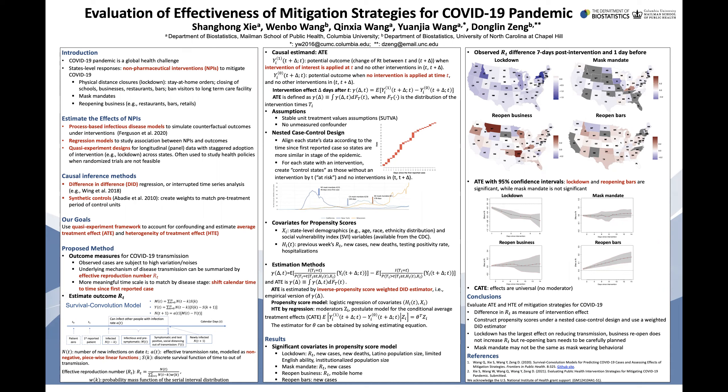To estimate the effects of NPIs, there are some methods in the epidemiological literature. Since the data is longitudinal data with staggered adoption, causal experiment designs are often used. Our goals are to use a causal experiment framework to account for confounding and estimate average treatment effect and heterogeneity of treatment effect.